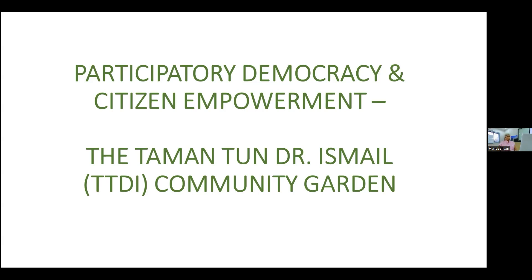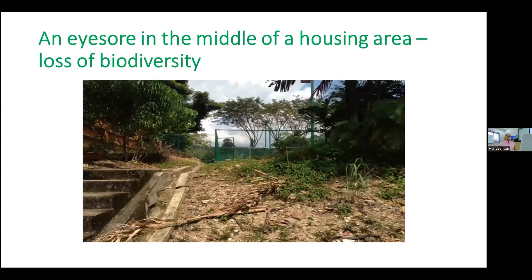But I'm not going to talk about that. I'm going to talk about something else, which is a community garden — the Tamantun Dr. Esmang Community Garden. How it all started: what you're seeing is around 2017, but this piece of land within the housing area had been there for years.